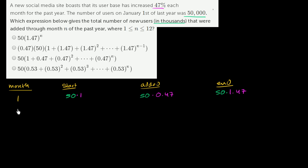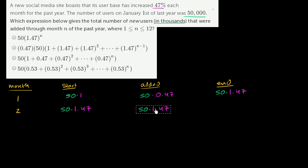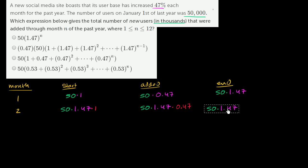Now let's go to month two. We start with what we ended last month: 50 times 1.47. What do we add? We're going to add that starting amount times 0.47. When we sum those two things, we end up with 50 times 1.47, all times 1.47, which we can write as 50 times 1.47 squared.